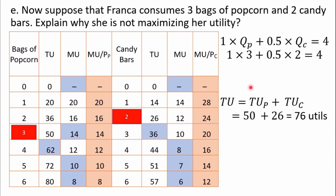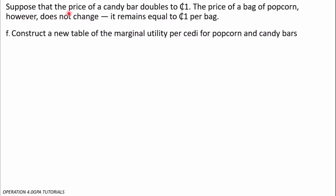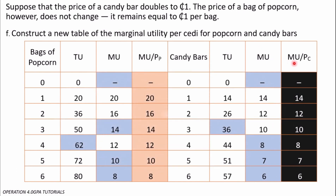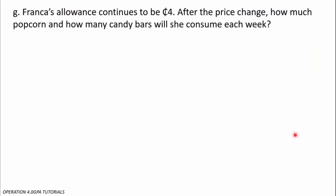Suppose the price of a candy bar doubles to 1 cedi, while the price of a bag of popcorn does not change and remains 1 cedi. We are to construct a new table of marginal utility per cedi for popcorn and candy bars. Since the price of popcorn remains the same, only the candy bar column changes. Now dividing the marginal utility of candy bars by 1 instead of 0.5, we get new MU-per-price values for candy.